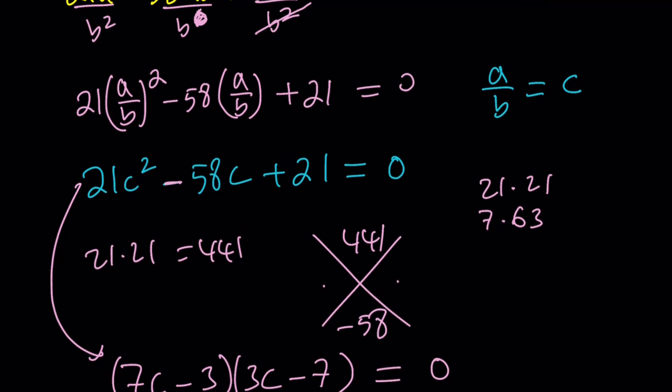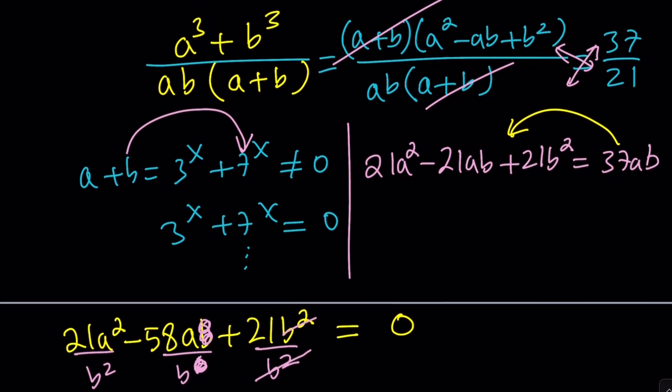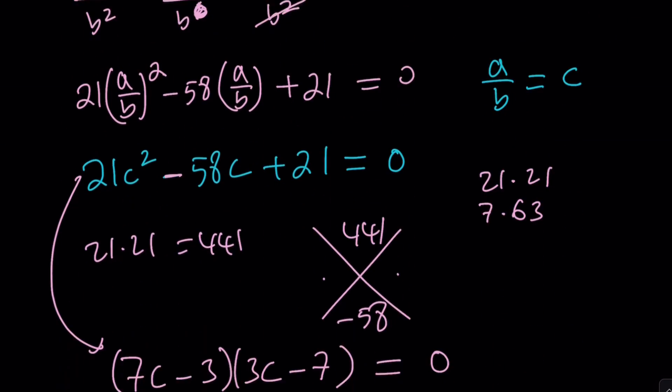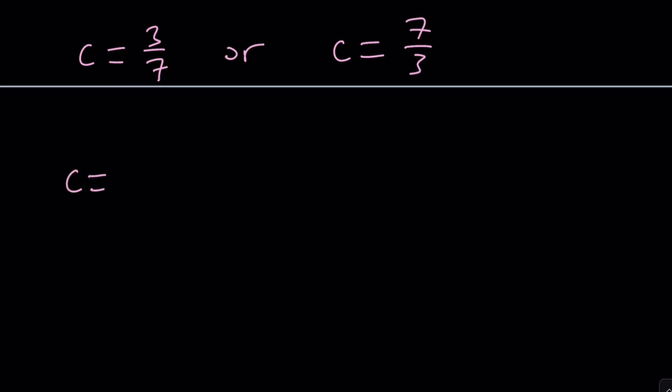But remember what c is. c is a/b, and a and b are 3^x and 7^x. So c is 3^x / 7^x, which can be written as (3/7)^x. Let's plug these in and find the x values. Set this equal to 3/7, you'll find x = 1.